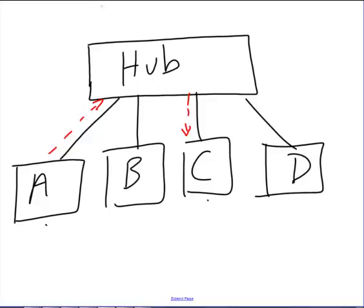Now, the interesting part about hubs is that if A is trying to send a packet destined for C, that packet does, in fact, get sent along the link that connects the hub to C. But it also gets sent along any other outgoing links as well.